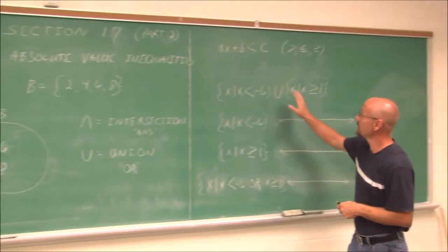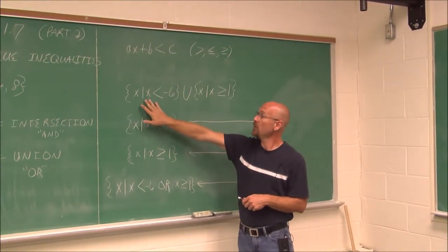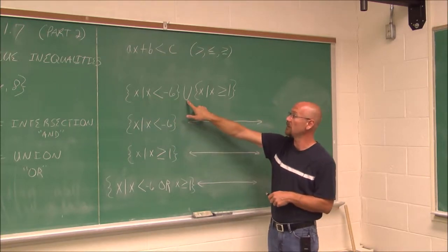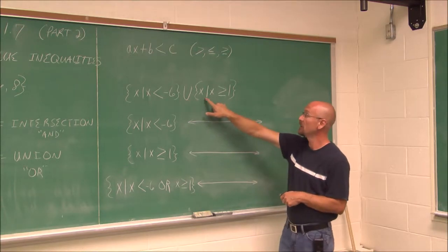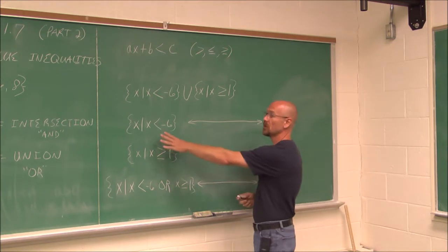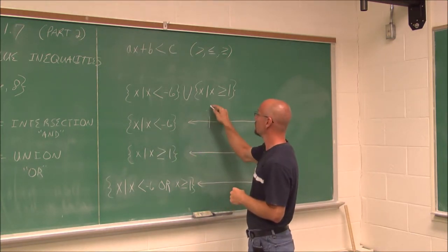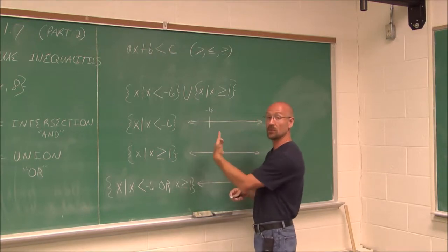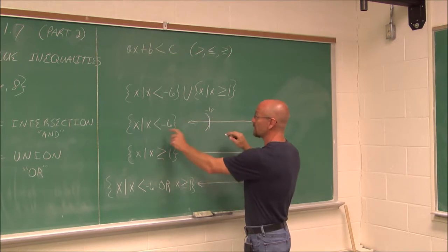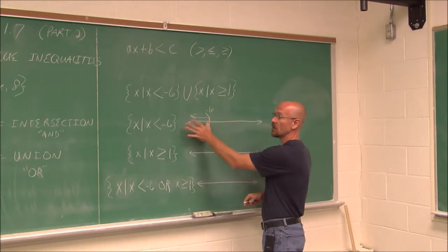Looking at this example with linear inequalities: if we have the set x such that x is less than negative 6, and we want to find the union with the set of x such that x is greater than or equal to 1. Looking at them individually, x is less than negative 6 means if this value is negative 6, any value less than that would be to the left. So we use a parentheses because it does not include that value, and anything to the left — this is the graph of that set.